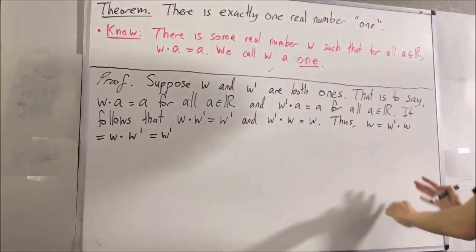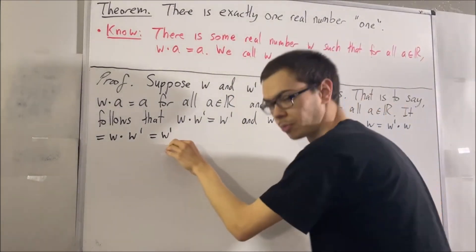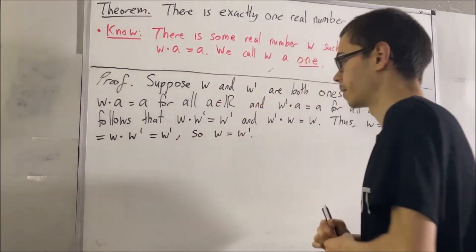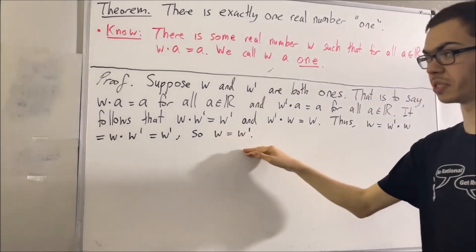So through this chain of equalities, we see that w is equal to w prime, and that's exactly what we wanted to deduce.